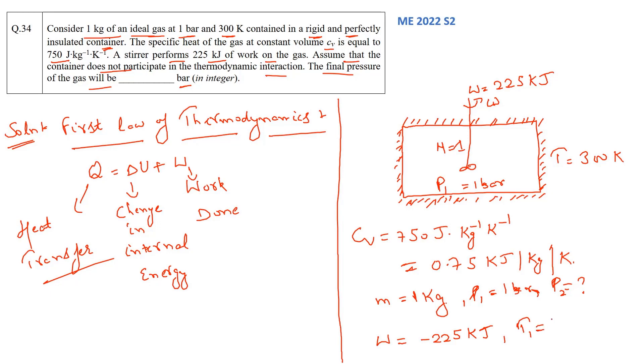Temperature is 300 Kelvin and heat transfer would be 0 because it is an insulated system. So now what we will do is we will apply first law of thermodynamics which states Q is equal to delta U plus W. Q is equal to 0 and CV,